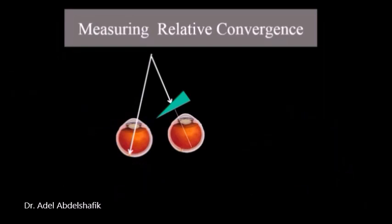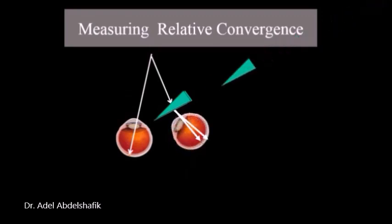Lastly, we can use prisms to measure the relative convergence. Prisms can be used with the eye fixing one point. Both eyes are open fixing one point. Then we gradually add prisms of increasing power in front of one of the eyes.